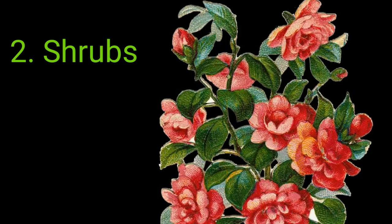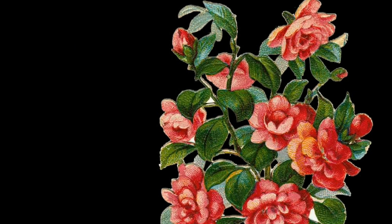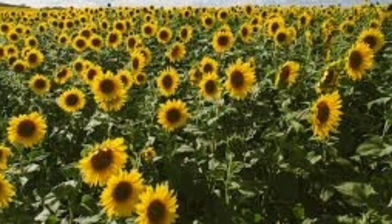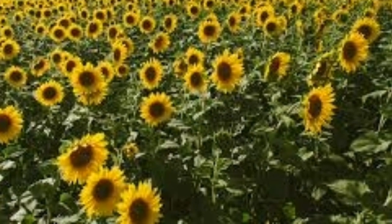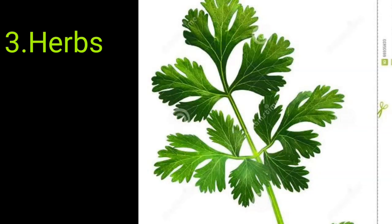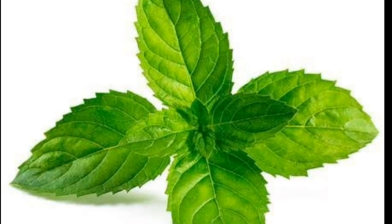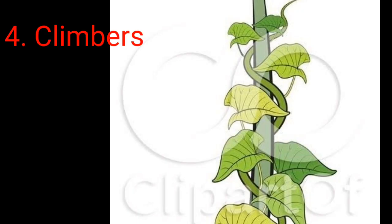Number two: Shrubs. Plants such as rose and sunflower are small but strong. They are bushy, and such plants are called shrubs. Number three: Herbs. These are small and weak plants — for example, coriander and mint.